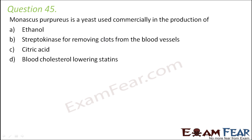(B) streptokinase for removing clots from blood vessels, (C) citric acid, or (D) blood cholesterol-lowering statins. Monascus purpureus is a species of mold which is purplish-red in color and it produces cholesterol-lowering statins. So option D is correct. It finds very useful application in the manufacture of medicines used to lower cholesterol.